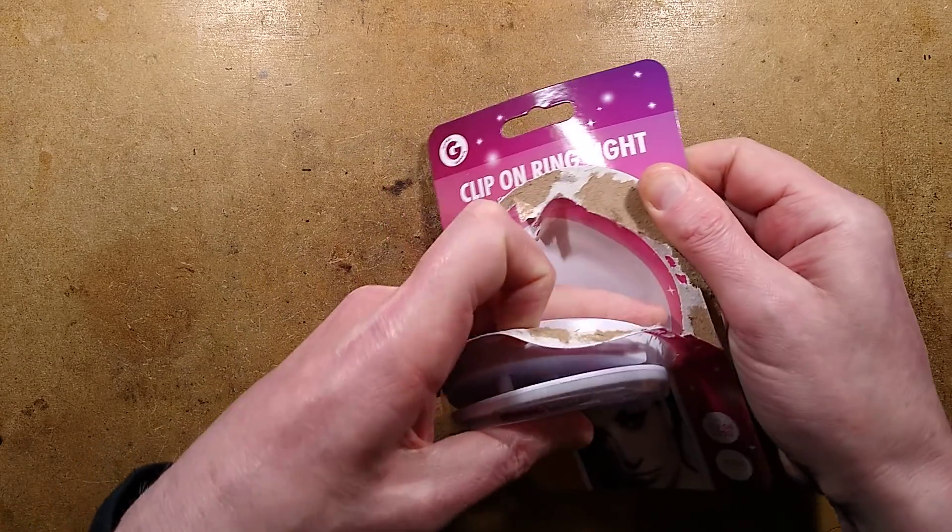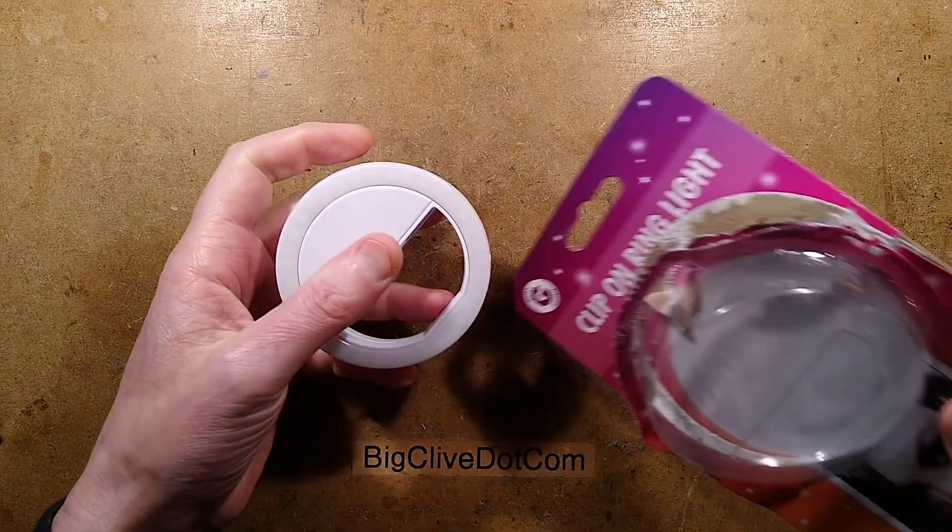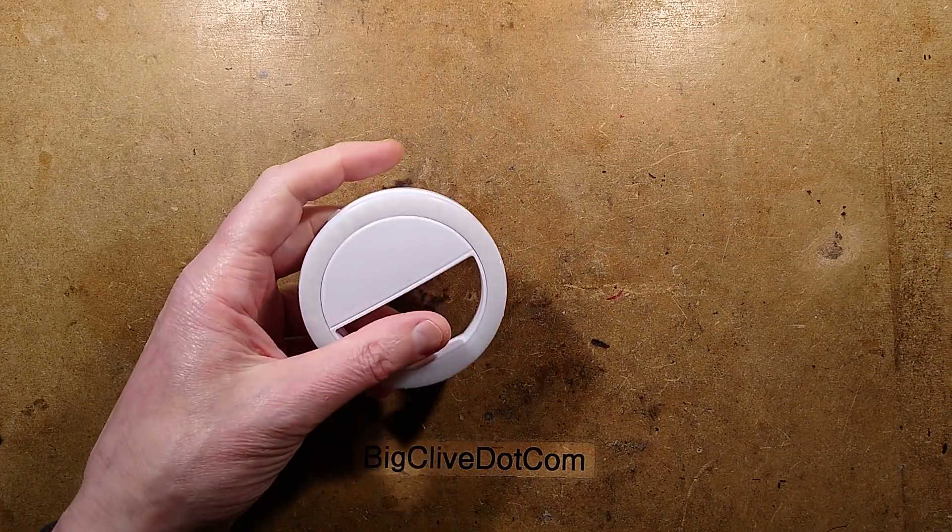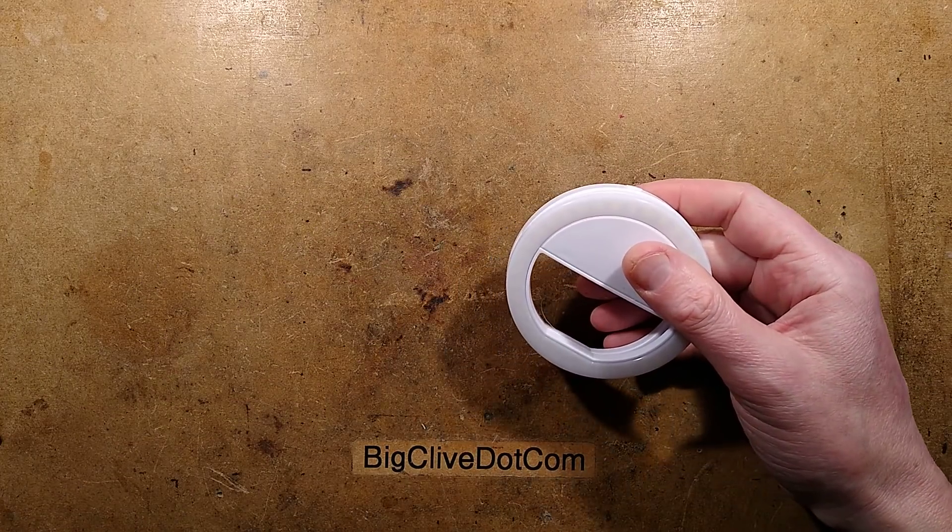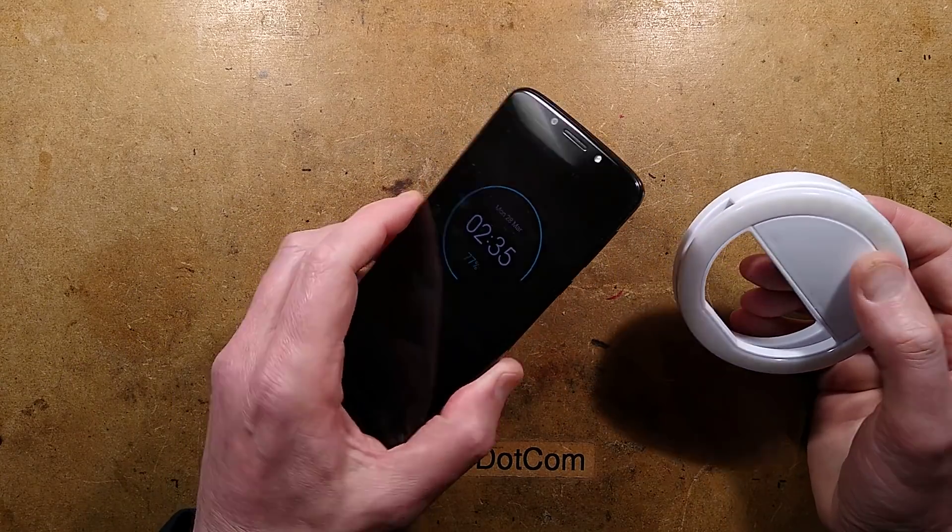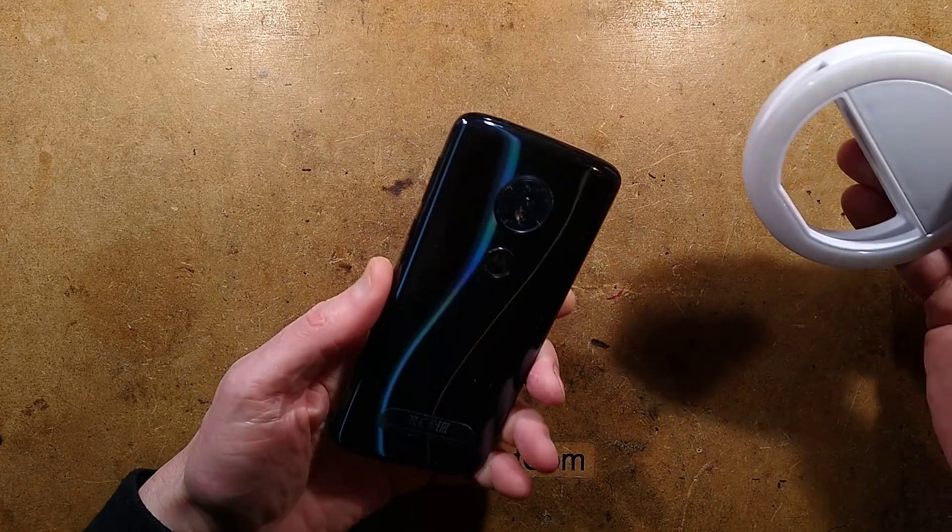It's purely for circular illumination to provide even illumination around objects from all directions. So here is my little macro camera, a little Moto G6.